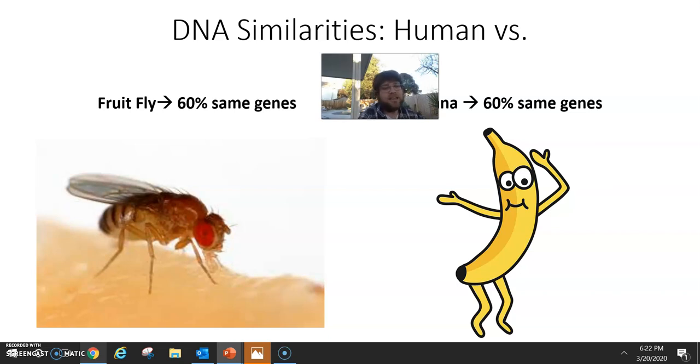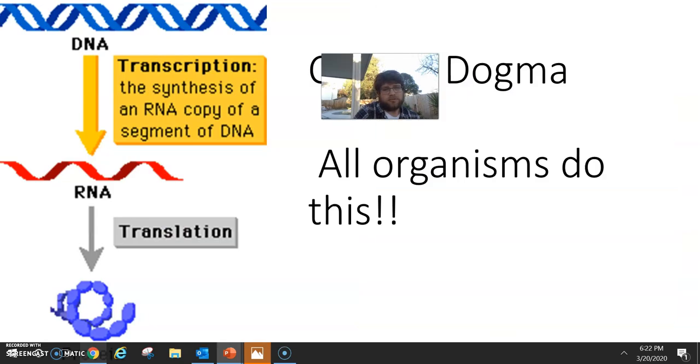Now, why do we have all the same DNA? Because at the end of the day, we're all using cells. We're all using the central dogma, using DNA to make RNA, to make protein. So all of those basic functions are controlled by some of the same genes or similar genes in all life.